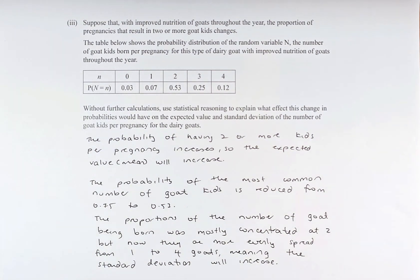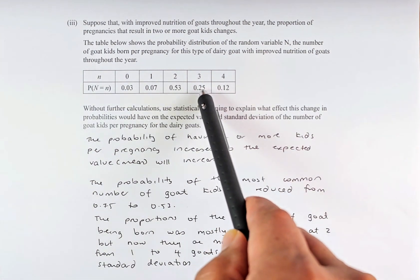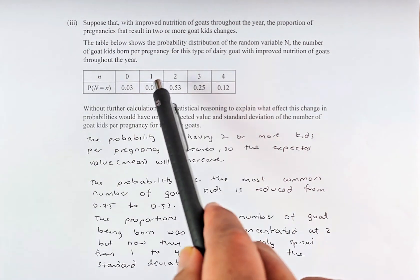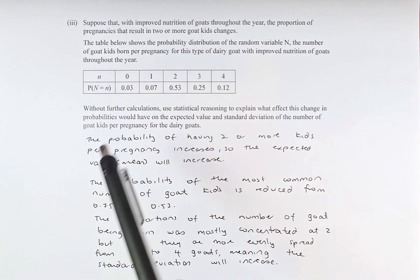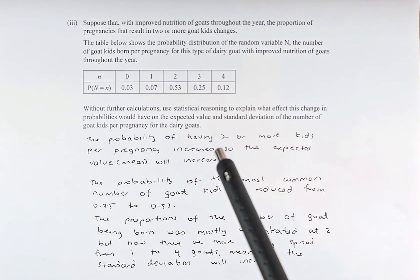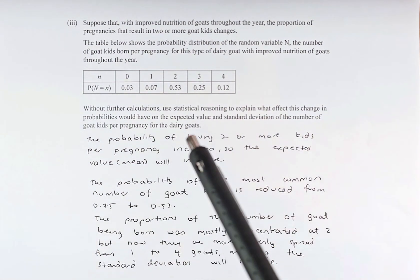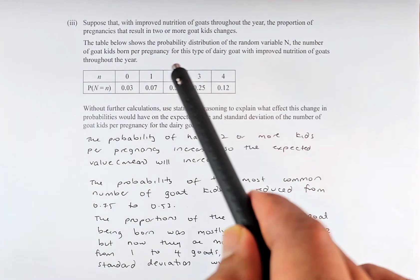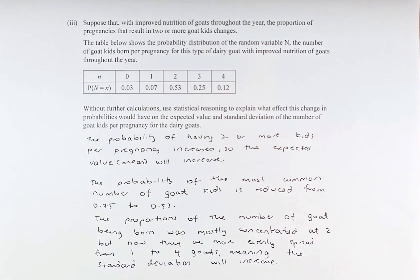The first thing is the probability of having two or more kids per pregnancy increases. So if you look at the table, the 3 goat kids and the 4 goat kids, the number has increased and everything else has decreased, especially the 2 goats. So what this means is that the expected number of goat kids born will also increase because the number of pregnancy 3 and 4 will increase. That's why the mean or the average will also increase. So that is the first point.